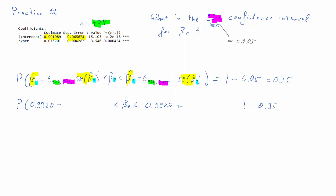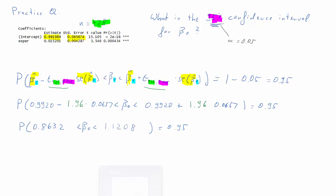Our probability is 95%. The standard error of beta 0 hat is 0.0657 on both sides. Now with a lot of degrees of freedom we're close to the normal distribution, and for 2.5% that t-factor is 1.96 — after a while you'll know this without looking at the table, but confirm it there. The rest is just plugging in numbers. Our 95% confidence interval for beta 0 has a lower bound of 0.8632 and an upper bound of 1.1208.